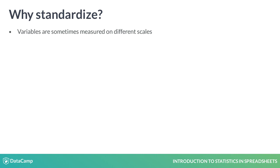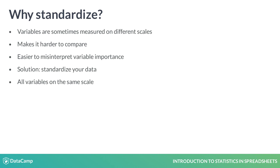This poses a problem because variables on different scales are harder to compare, and it may lead you to misinterpret the importance of a particular column. That column may appear more important simply because it has larger values than another, when in reality, it may actually have a very similar distribution to the column with smaller values. The solution to this problem is to standardize your data so that all your variables are on the same scale.